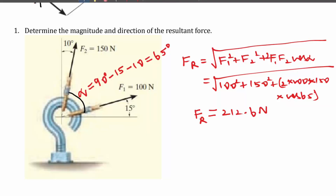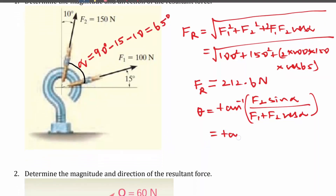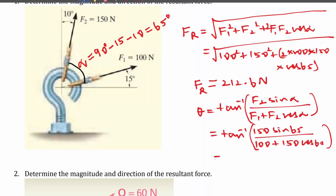Now to find out the inclination, we use the equation: θ = tan⁻¹(F2·sin α / (F1 + F2·cos α)). Substituting the values: θ = tan⁻¹(150·sin 65° / (100 + 150·cos 65°)). Solving this, we get θ ≈ 39.7°.